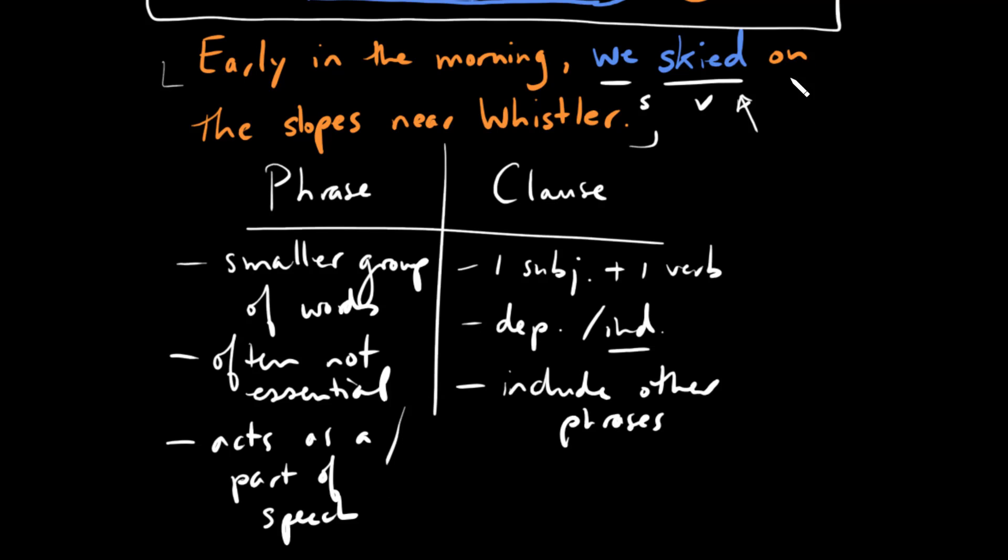If you look at the last part of the sentence we have two prepositional phrases. We have on the slopes and we have near Whistler. These are both prepositional phrases. They start with a preposition and they end with an object of the preposition, which is a noun in each case. So we have two prepositional phrases and they're not essential. We can put them in brackets and the sentence would still be a sentence. You could say, early in the morning we skied.